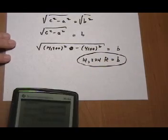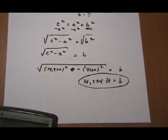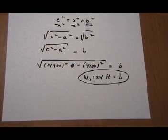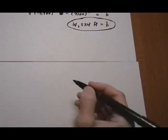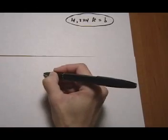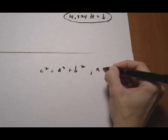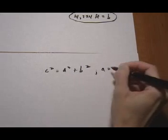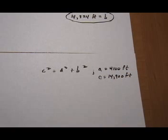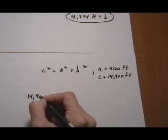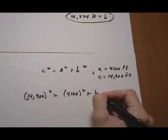Alright, so that's one way you can do the problem — solve for the variable first in terms of the other variables, then plug in the numbers once you have the equation. The other way is to go right to plugging in the numbers. So C squared equals A squared plus B squared, and we're given that A is 4,100 feet and C is 14,900 feet. So: 14,900 squared equals 4,100 squared plus B squared.